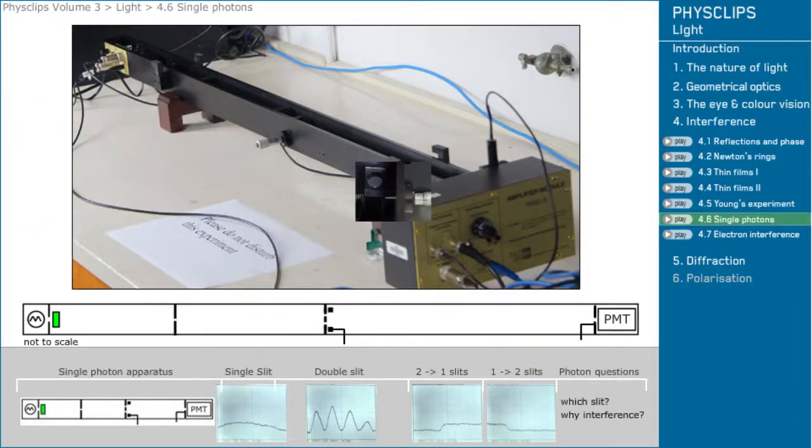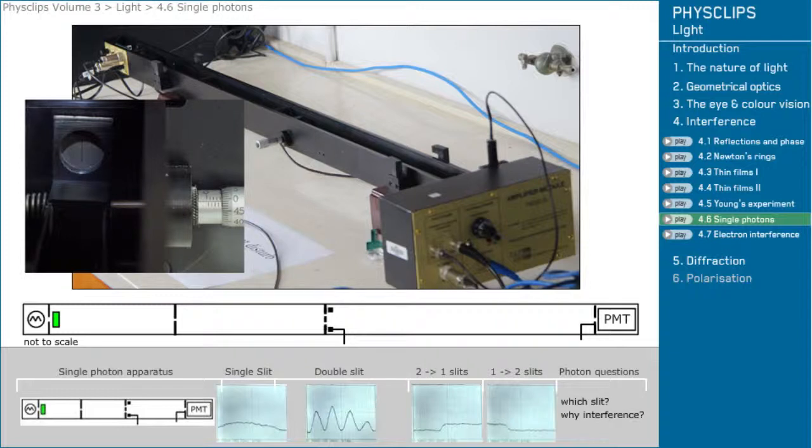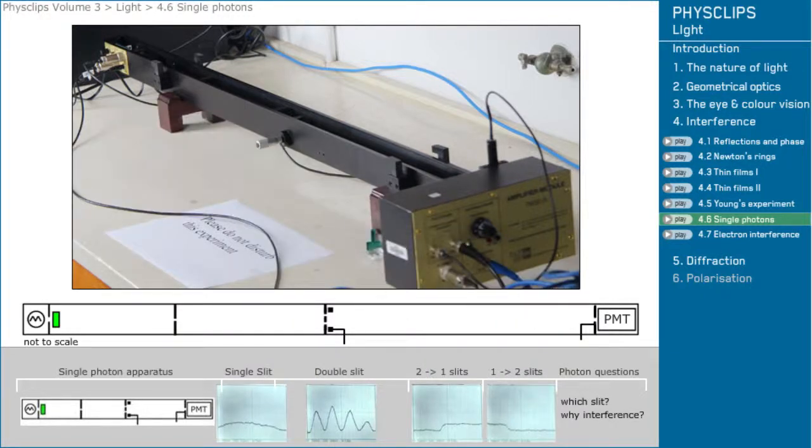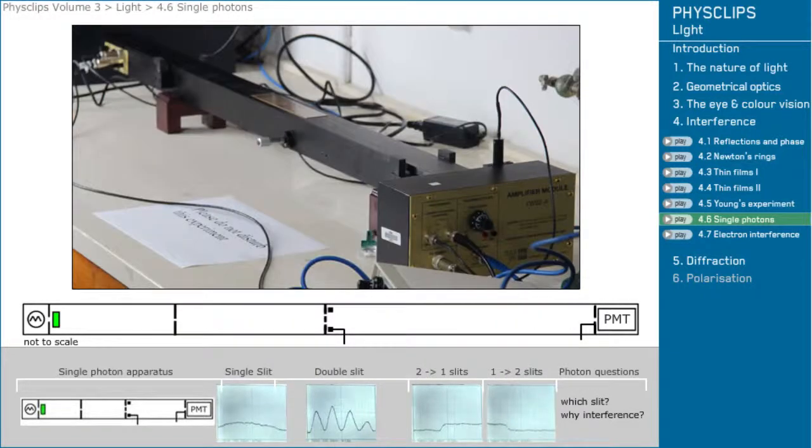Instead of a screen we have a narrow window and a sensitive photomultiplier tube that can record the capture of individual photons. We close the lid to keep out ambient light.